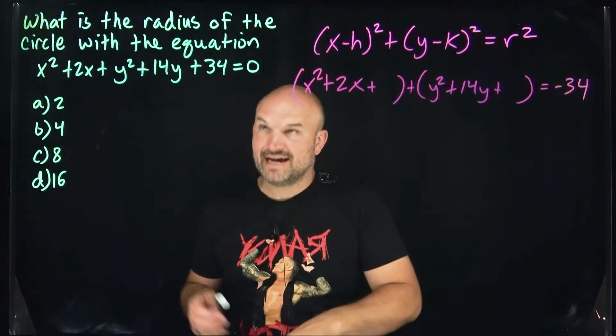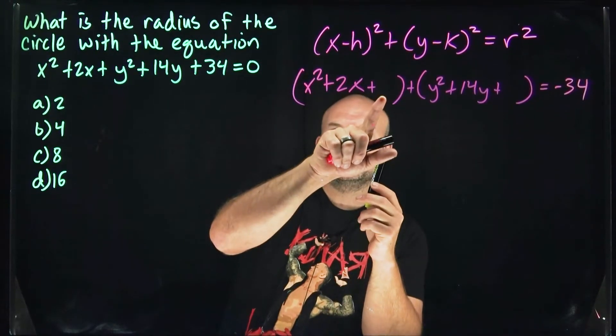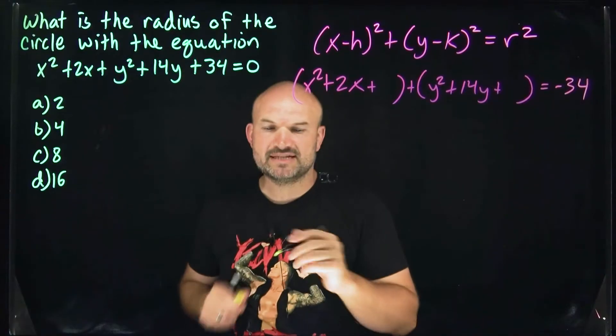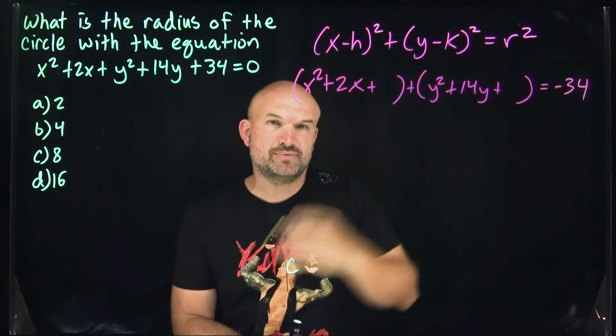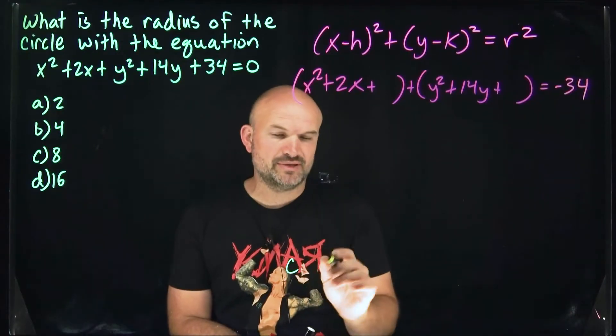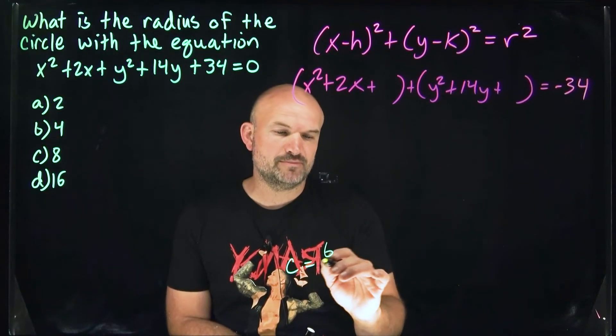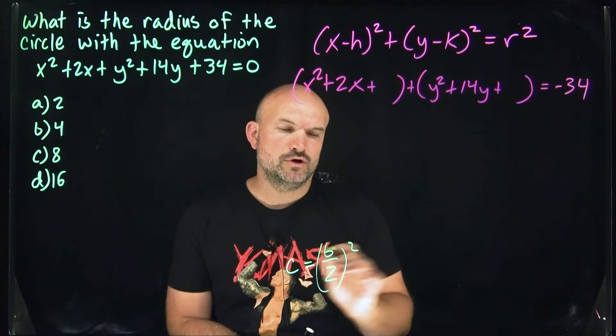The first thing I did is create these blank spots. These blank spots are for our C, which is the value that creates the perfect square trinomial. If you forgot about completing the square, C is simply B divided by 2, quantity squared.